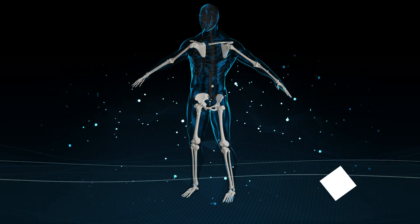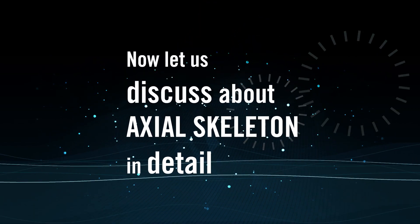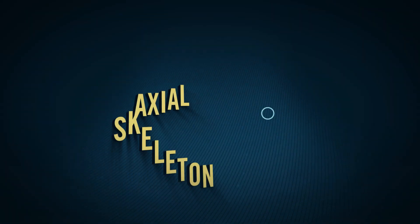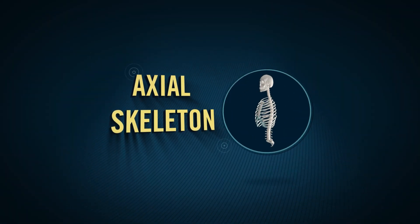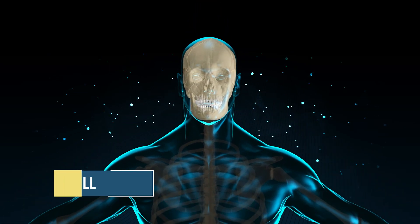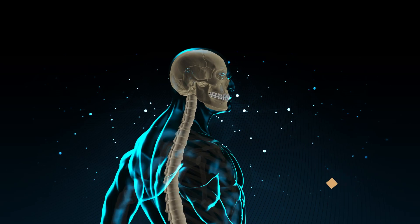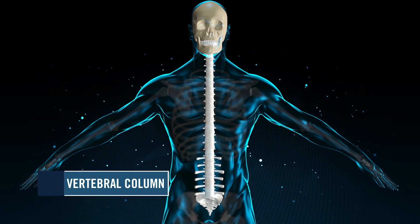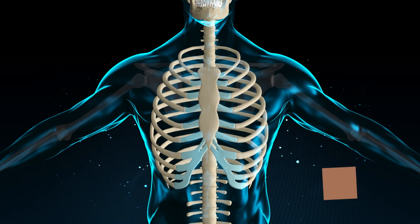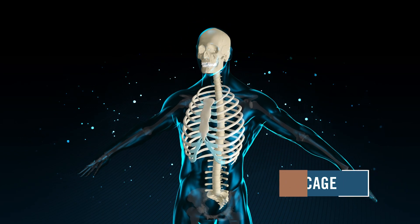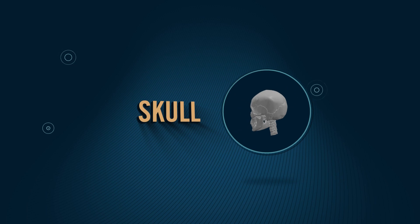Now let us discuss about axial skeleton in detail. Axial skeleton consists of the skull, hyoid bones, vertebral column, and thoracic cage.